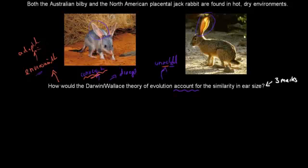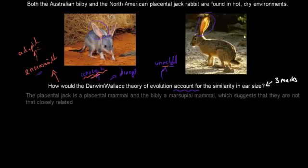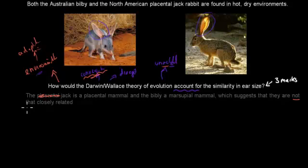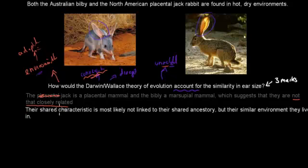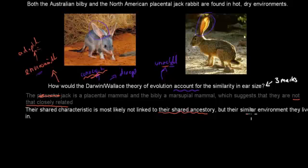Here's the answer I wrote: the jackrabbit is a placental mammal and the bilby is a marsupial mammal, which suggests that they are not closely related. Because they're actually different types, they're not that closely related. Their characteristics are most likely not linked to their shared ancestry — they have these big ears not because they're closely related, but because of the similar environments they live in. It's due to their similar environments, not their shared ancestry.